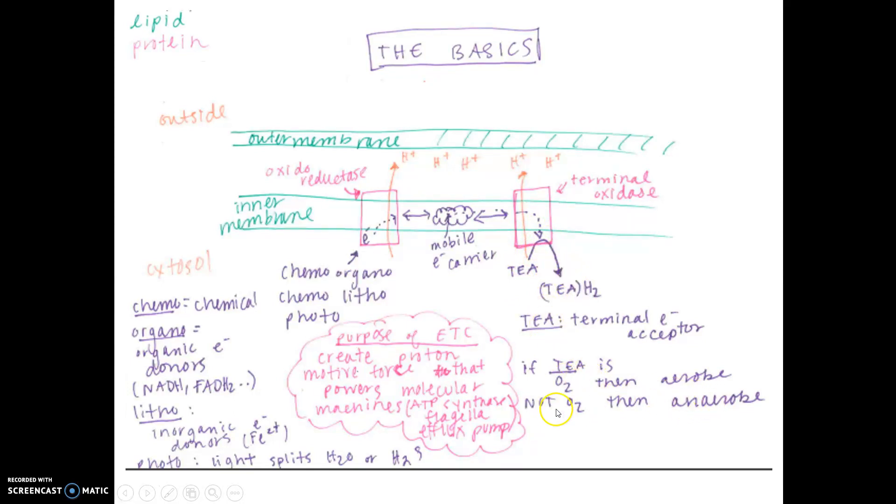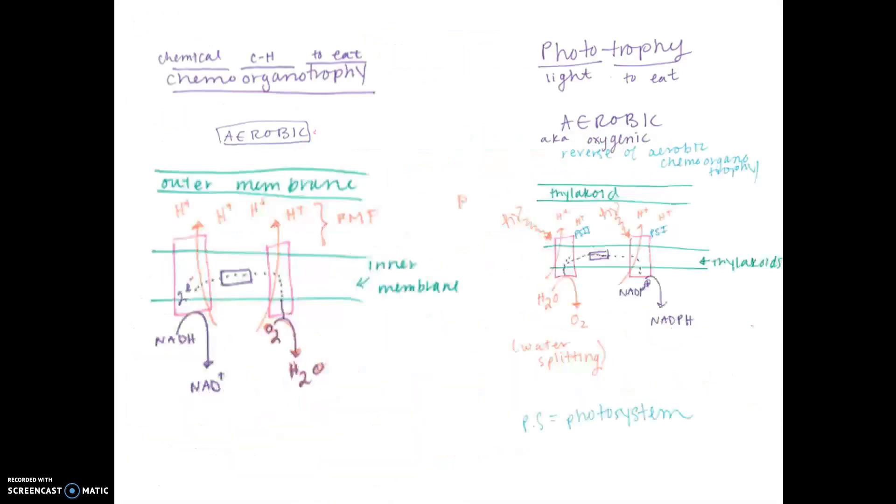If it's aerobic, the terminal electron acceptor is oxygen. If it's anaerobic, the acceptor is not oxygen. The whole idea is to create the proton motive force that powers molecular machines like ATP synthase for cellular respiration, or flagella or efflux pumps.